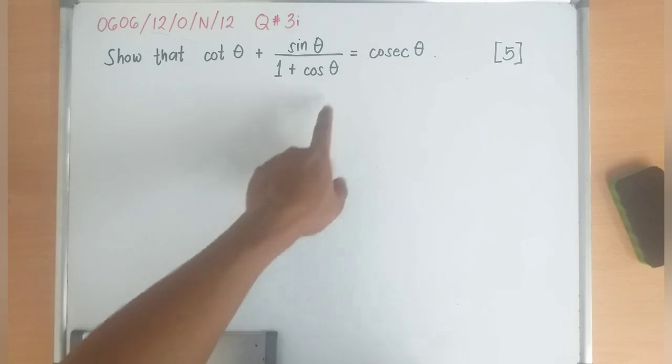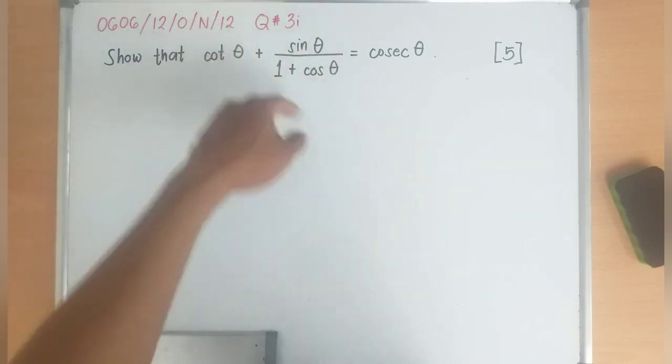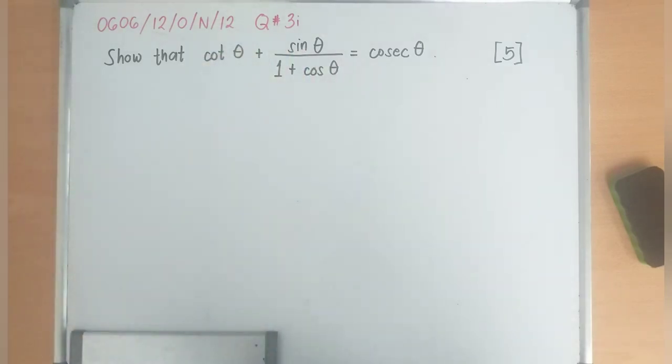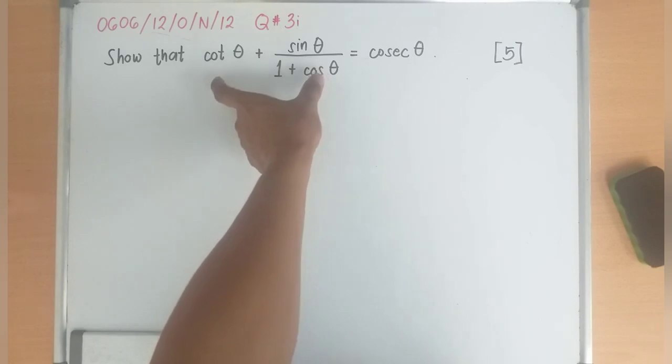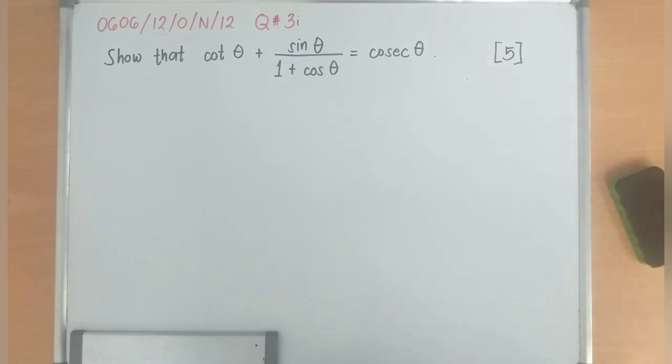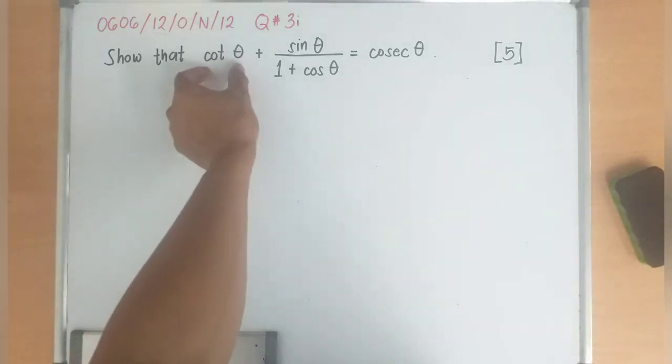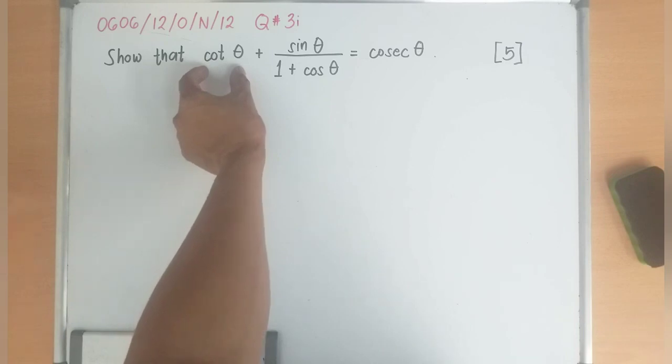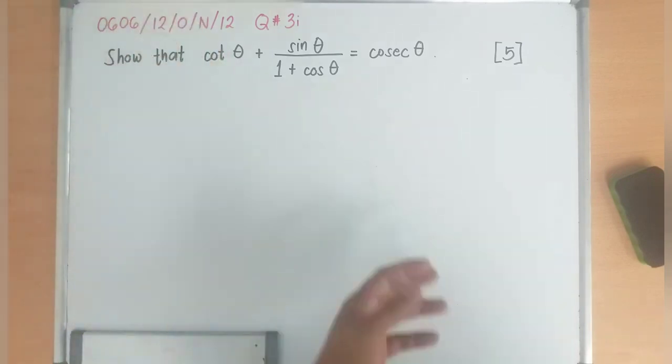So if you will see, the left side is the most complex one, so I'm going to do the left hand side of the identity. And now what I'm going to do is make the cotangent as sine and cosine.